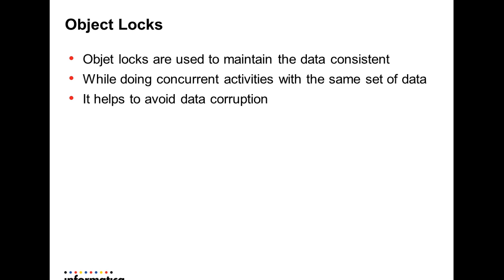What is the object lock? Object locks are mainly used to maintain data consistency. While running concurrent actions on the same set of objects by multiple users, there is a high chance of data corruption. To prevent that, we place different types of object locks based on the activity that the user is going to perform.